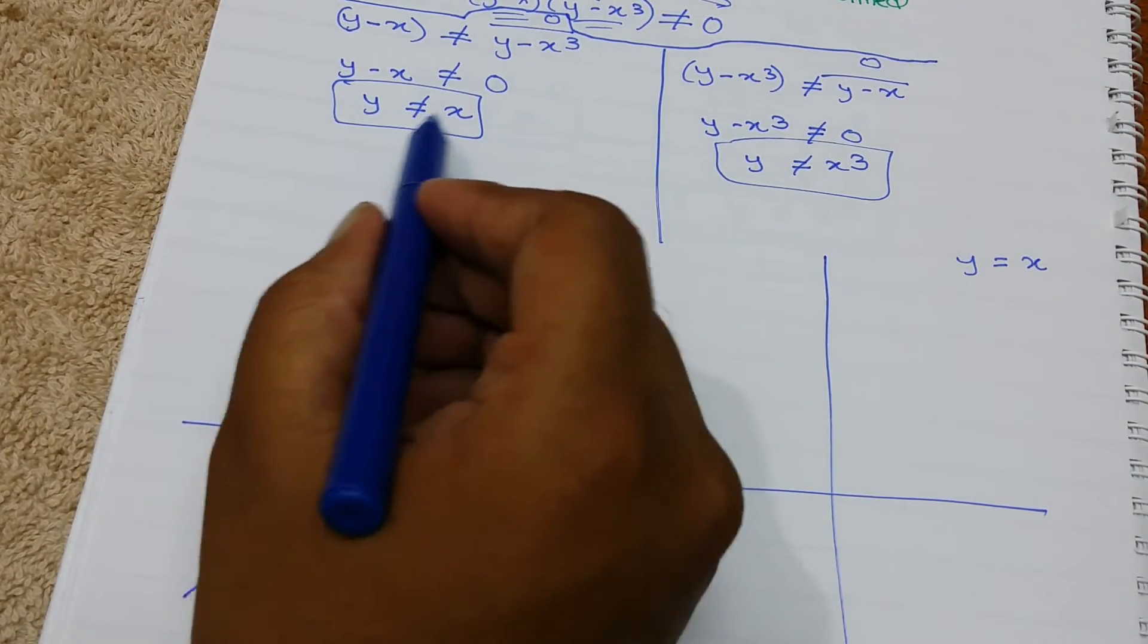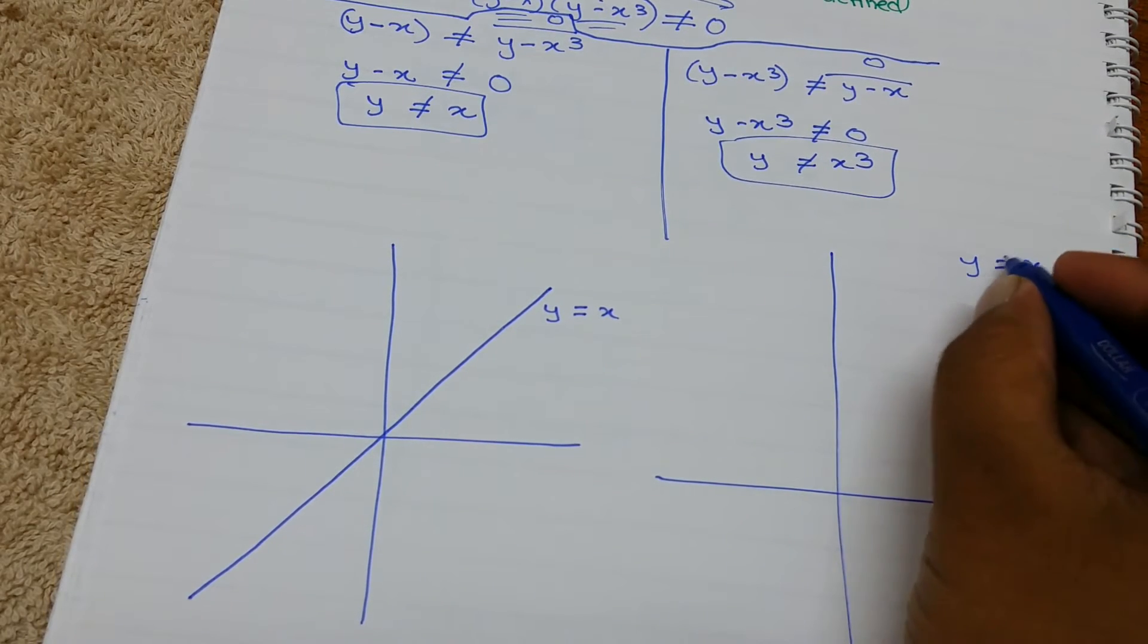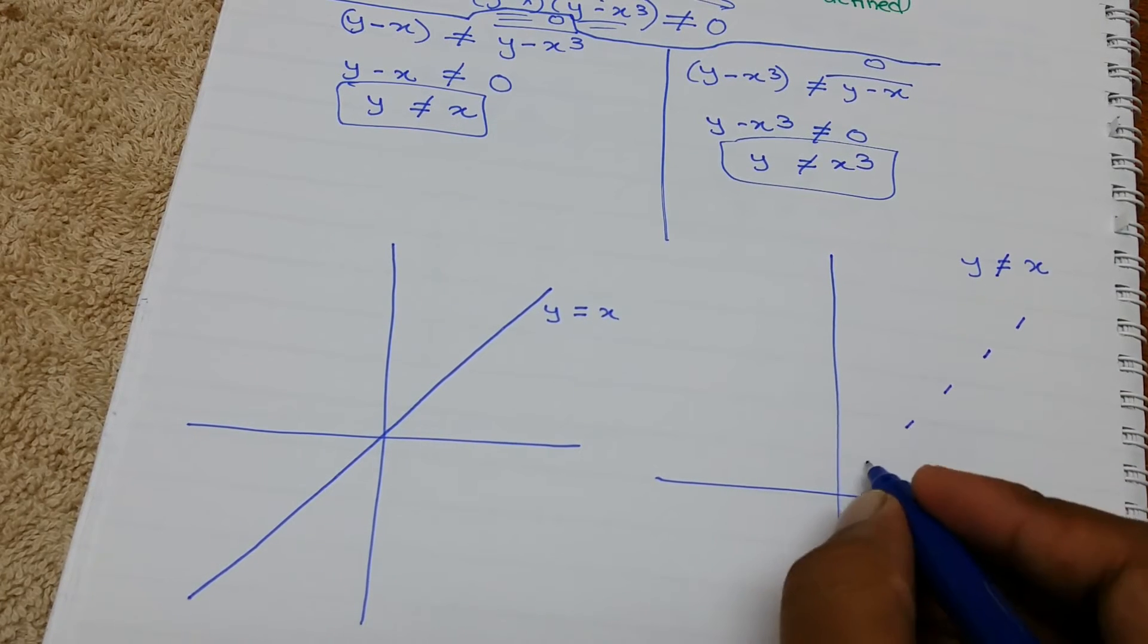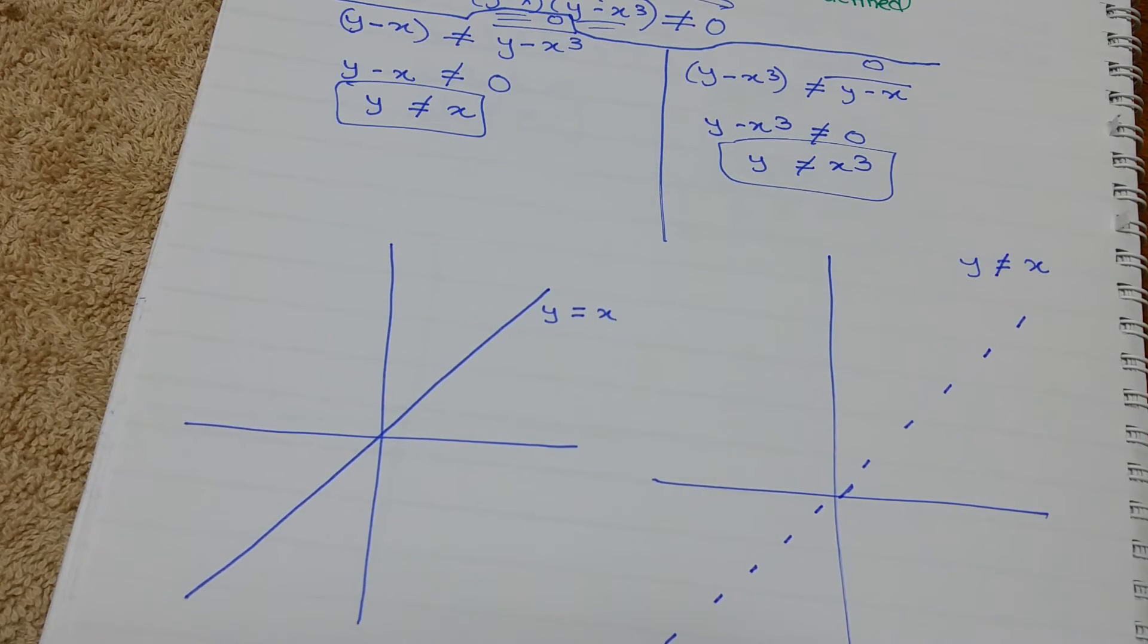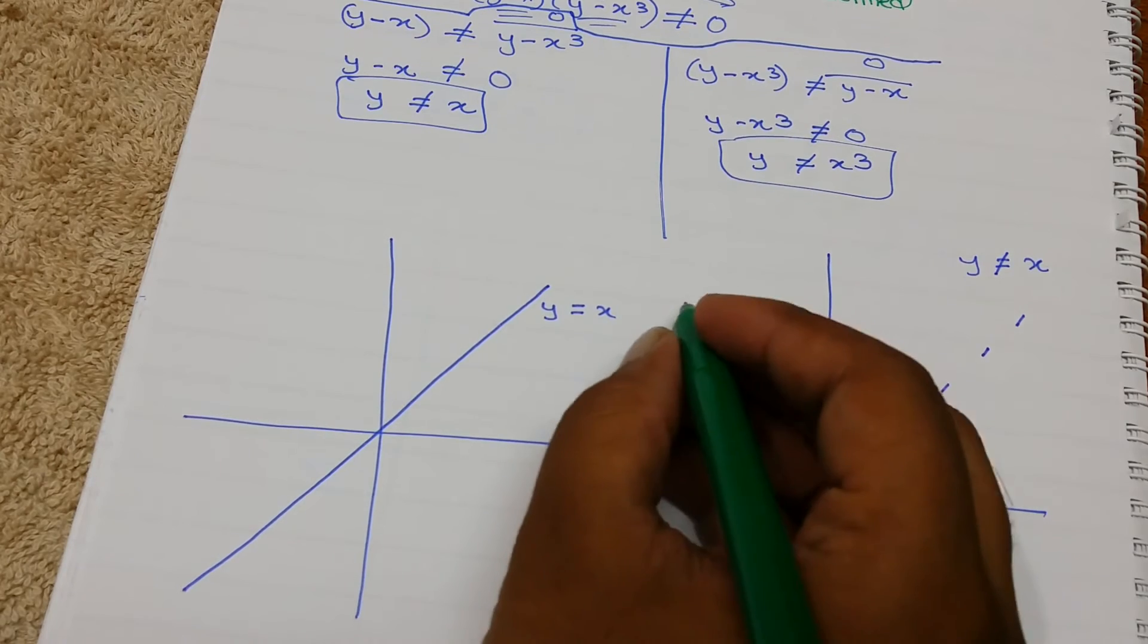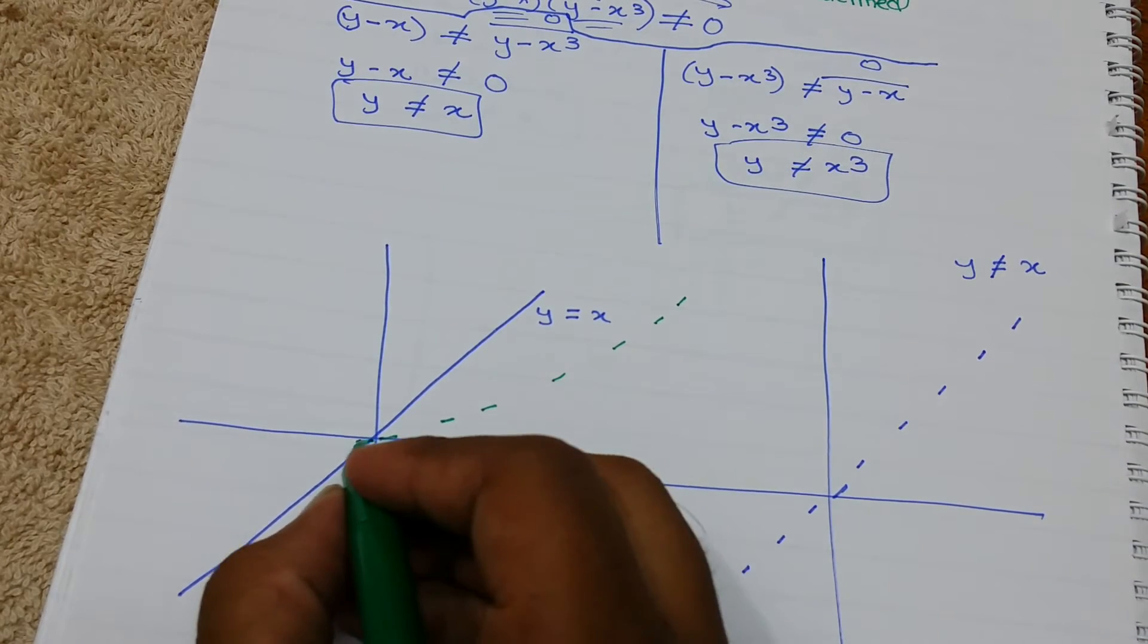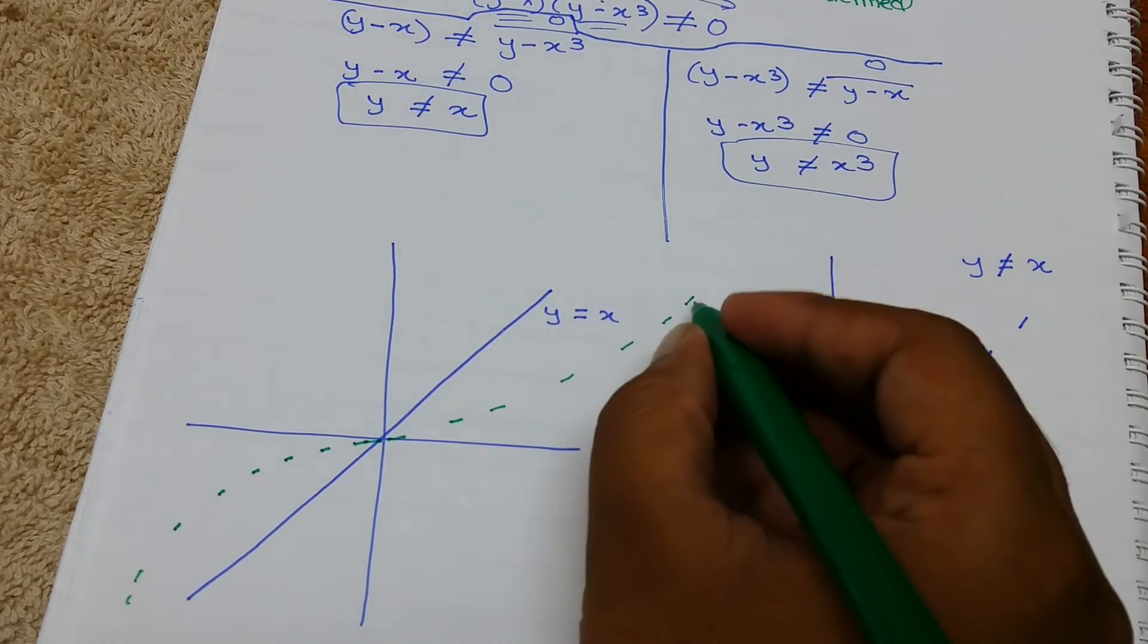Now we know that this is the graph of y = x. Let's just forget this not equal to sign for a minute. We will draw it like this. And the graph of y = x³ we will draw it like this. It will come like this and like this.